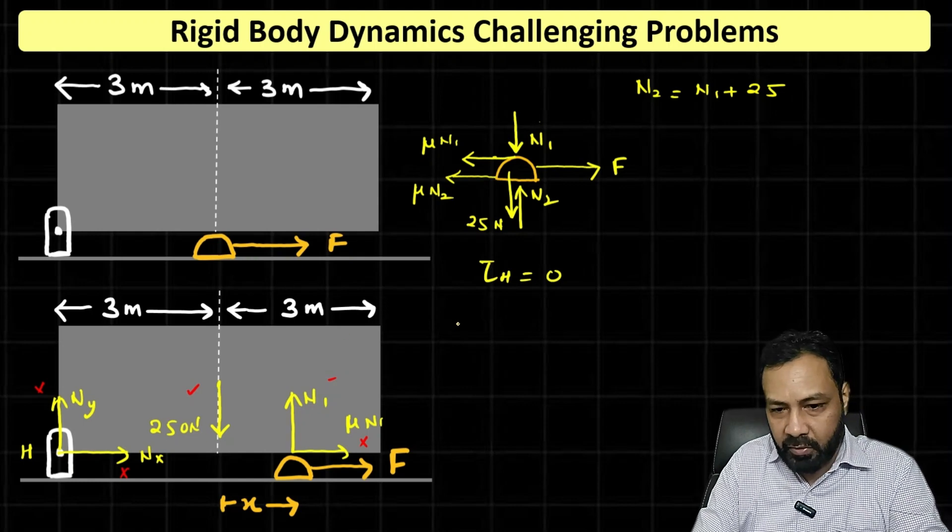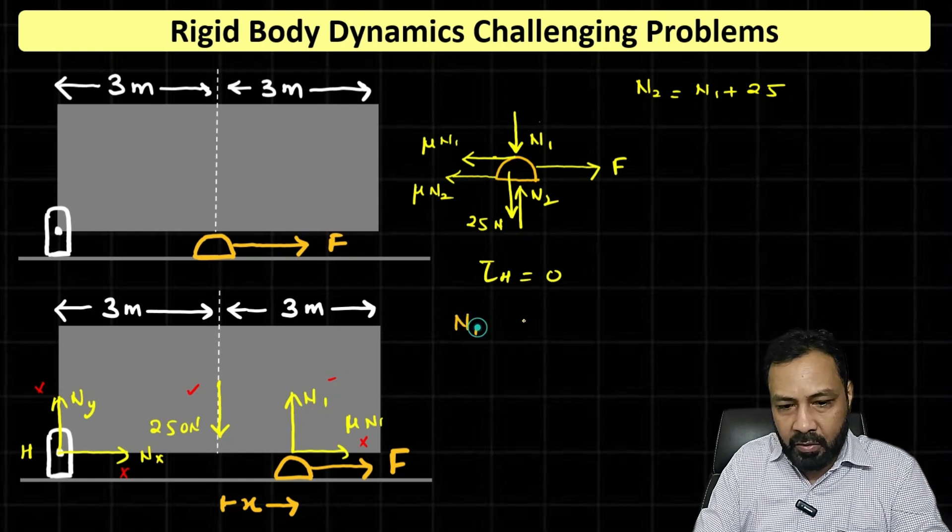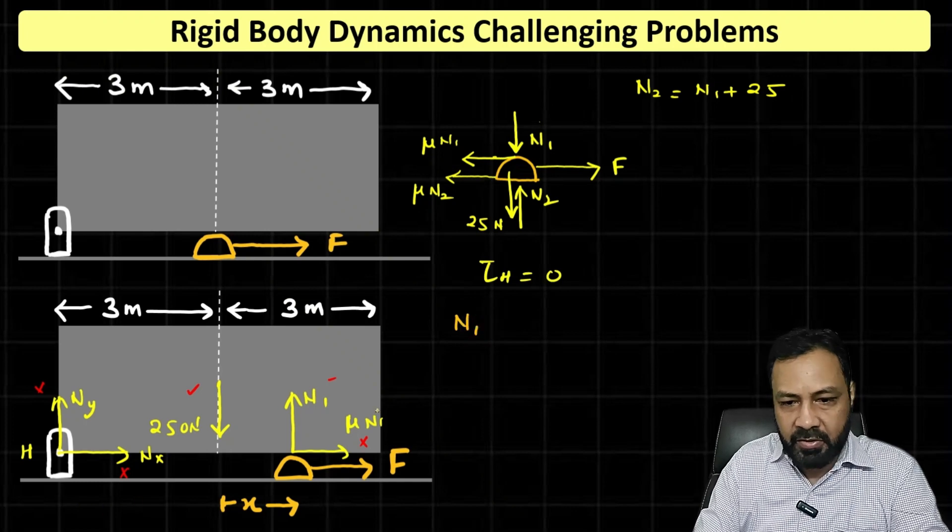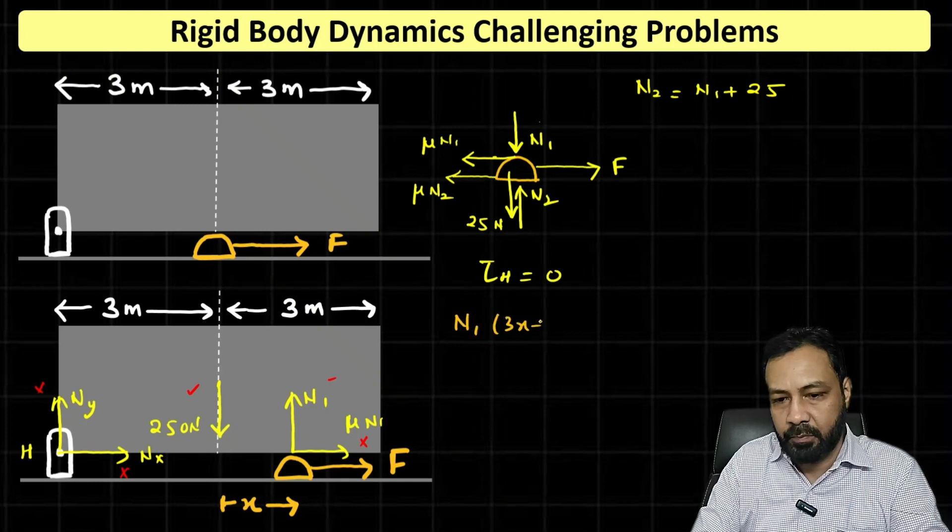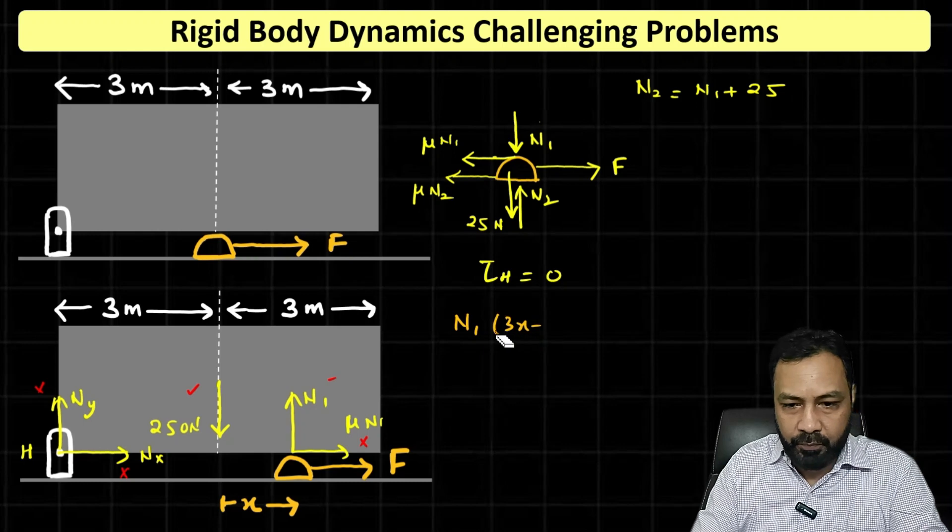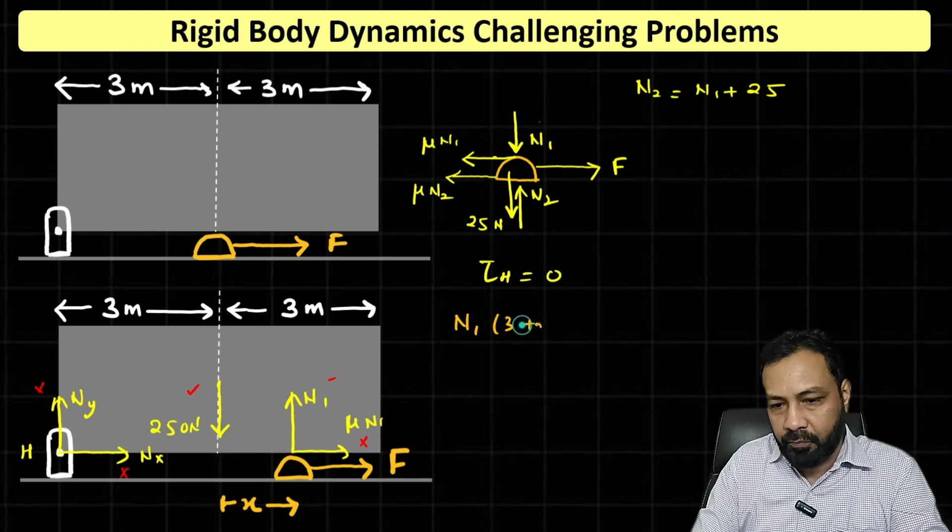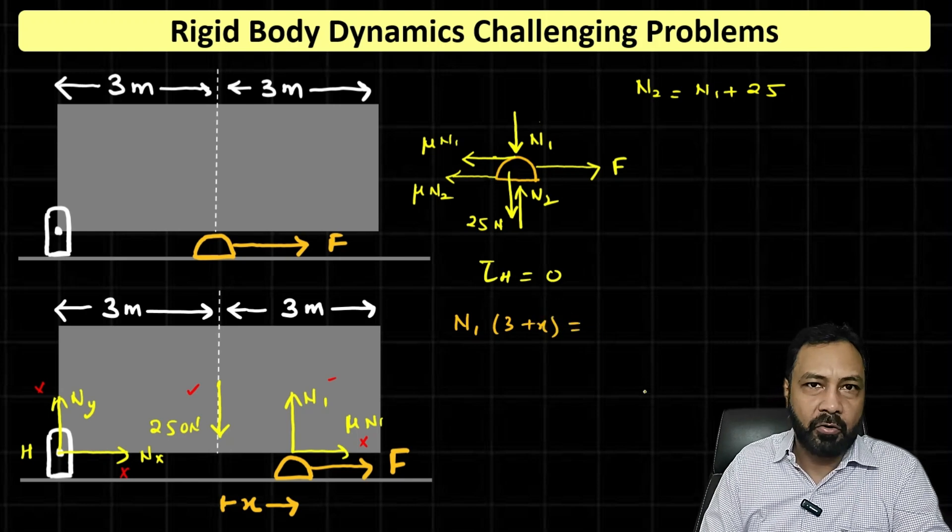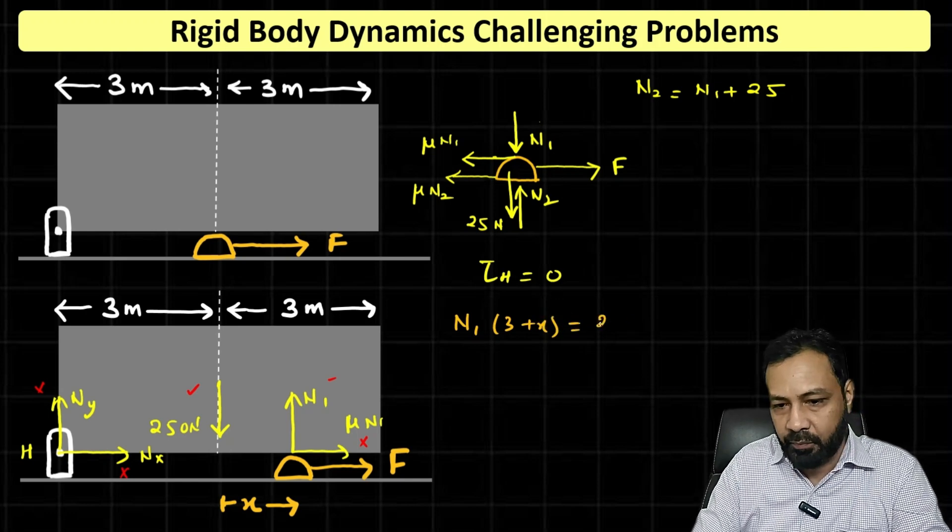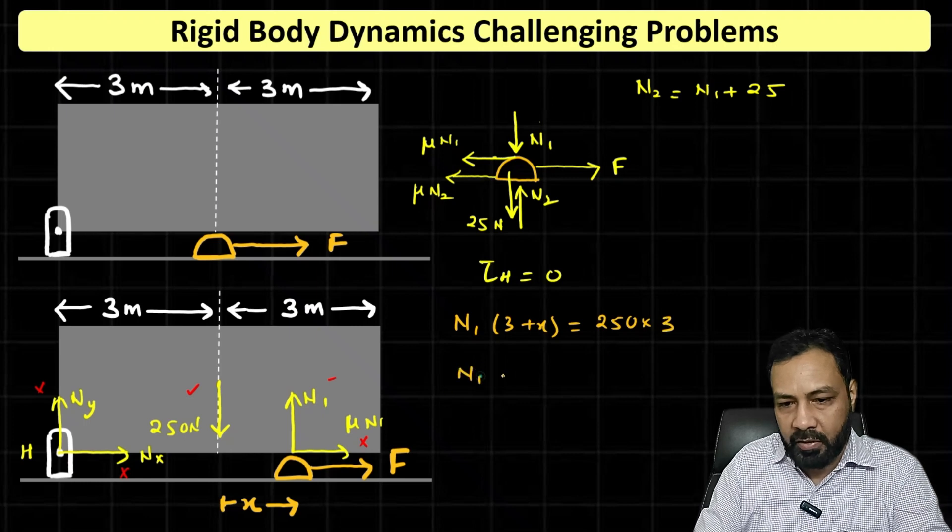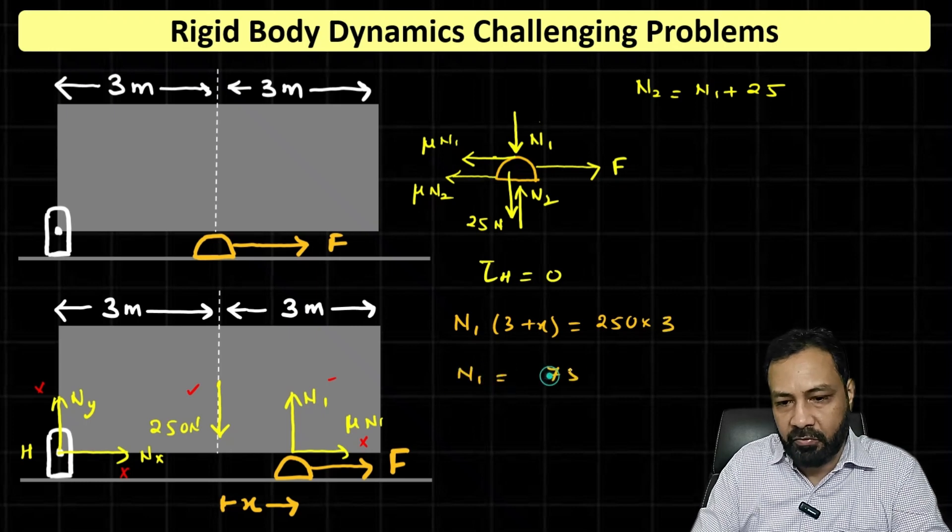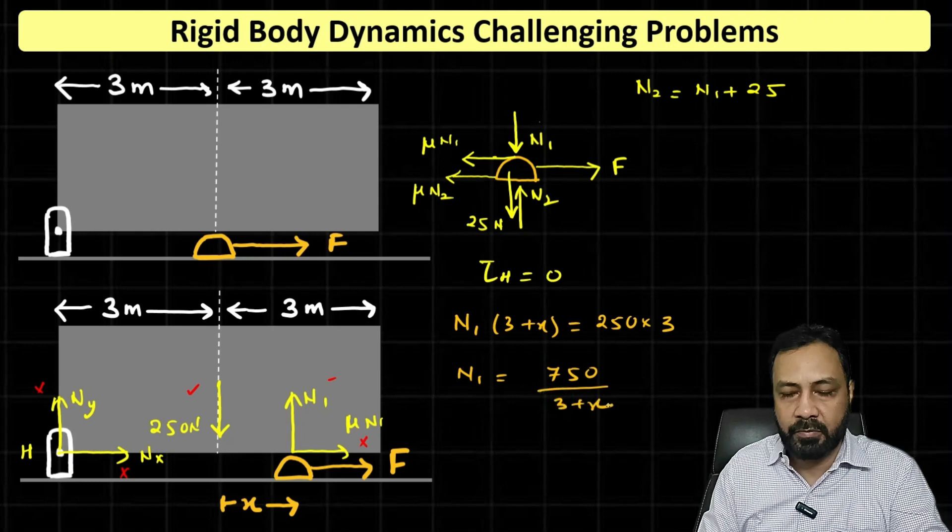Torque due to N1 is N1 times the distance, which is 3 plus x. That is balanced by the torque due to its weight, that is 250 into 3. So N1 at the moment is 750 divided by 3 plus x.